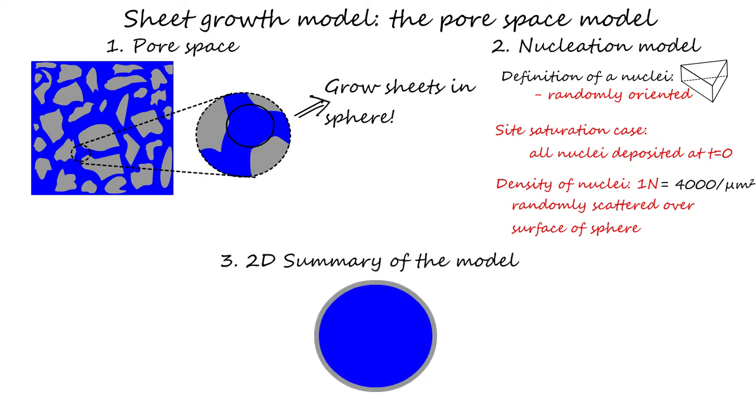We conclude this slide with a short two-dimensional summary of the model. Sheets grow within a spherical capillary pore space surrounded by the cement grain surfaces. On the surface, we place the CSH seeds. This leads to an inward growth of the sheets. Despite the two-dimensional nature of this and most further figures shown, it is important to note that the whole model is actually three-dimensional.